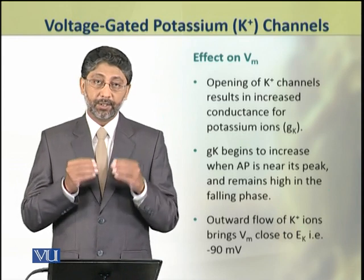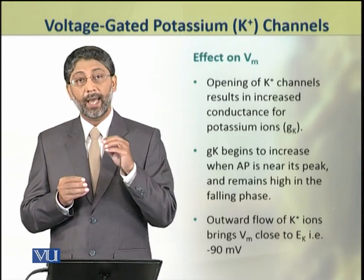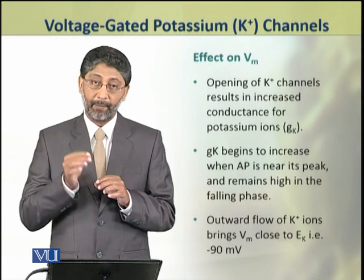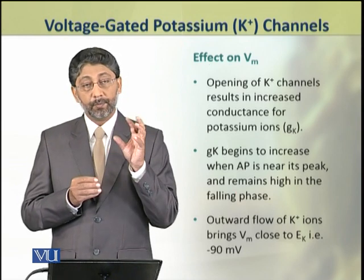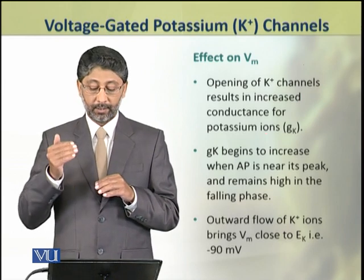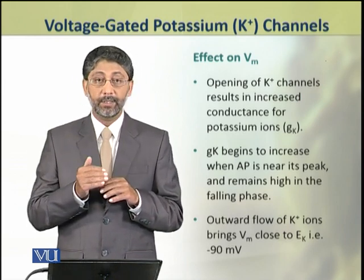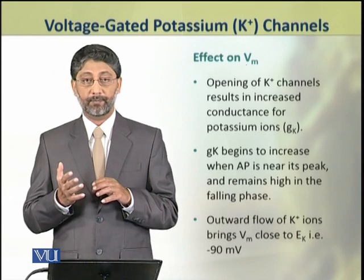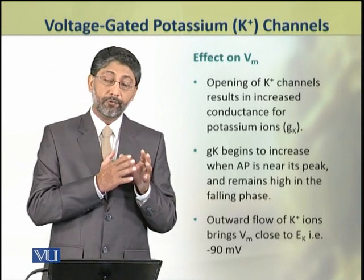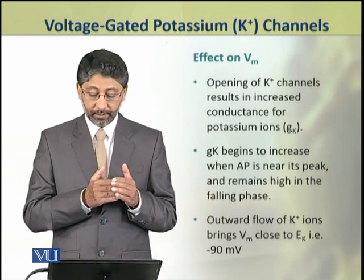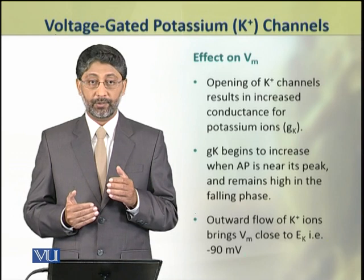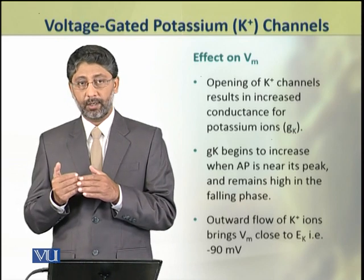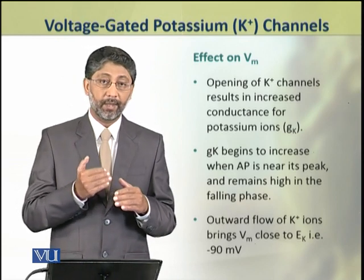The opening of potassium channels results in an increase in the conductance of potassium across the membrane. The potassium conductance begins to increase when the action potential is near its peak and it remains high in the falling phase. The outward flow of potassium ions results in decreasing the membrane potential to the potassium equilibrium potential, that is about minus 90 millivolts.